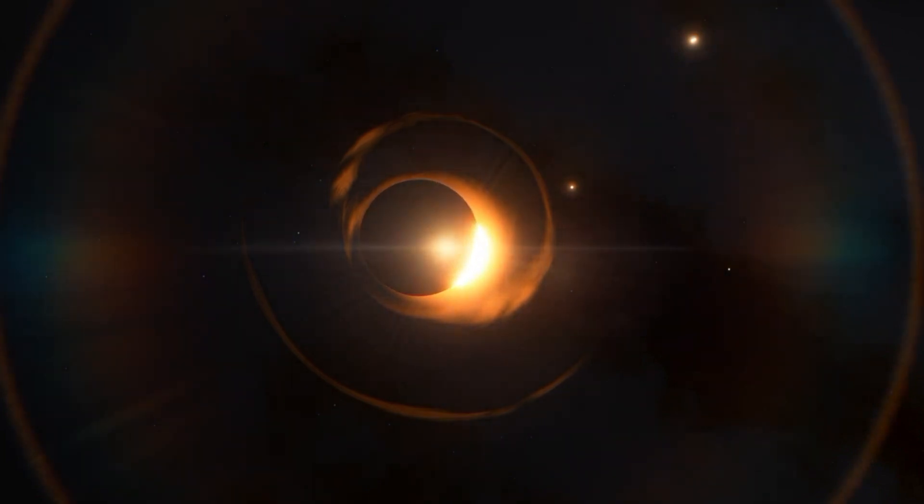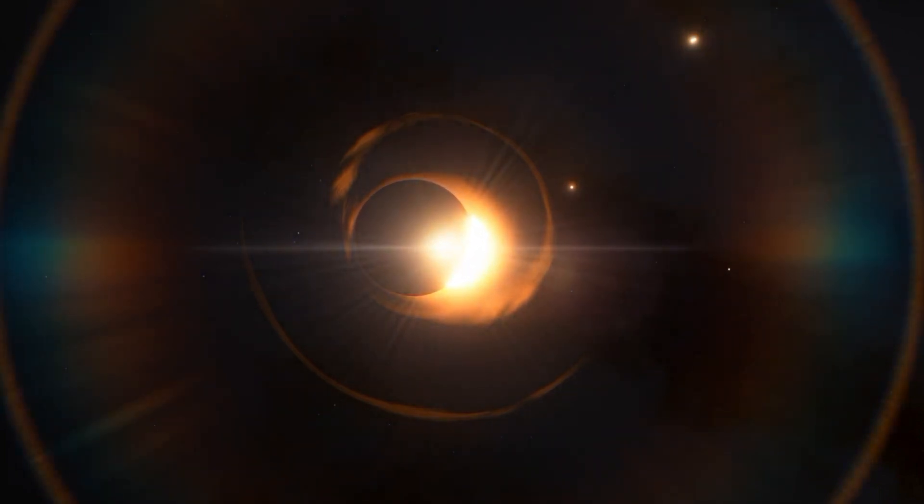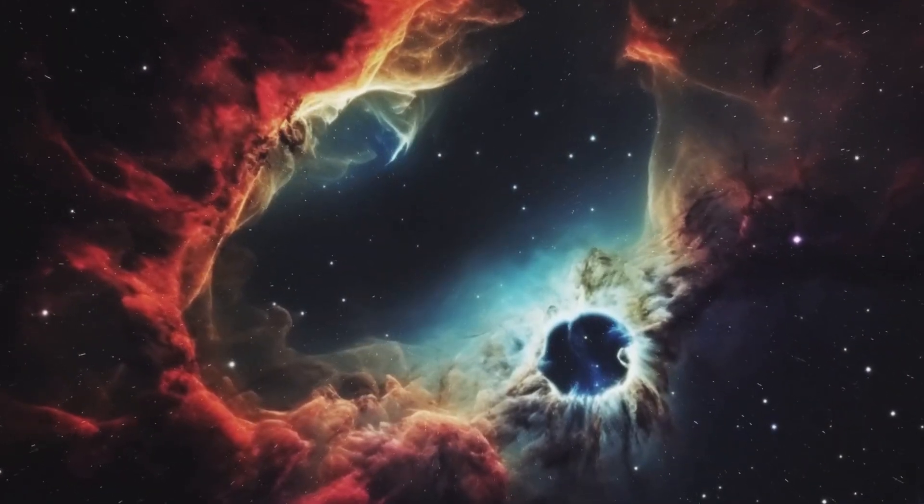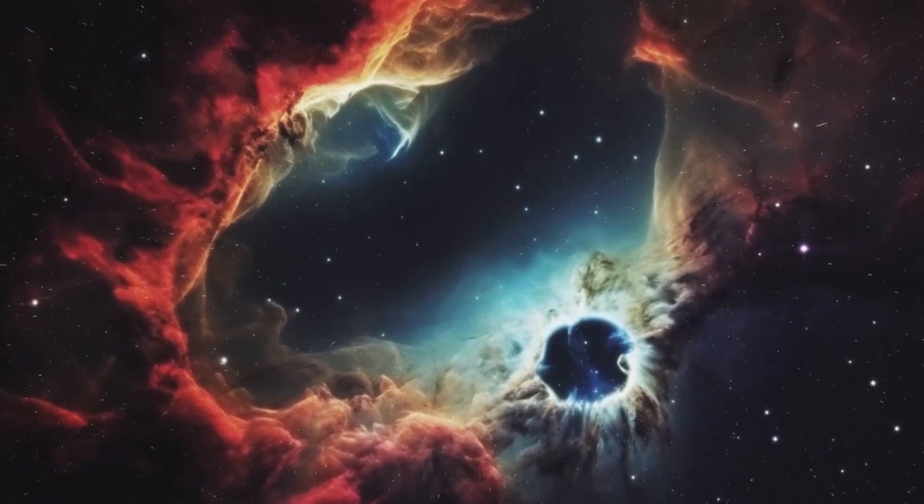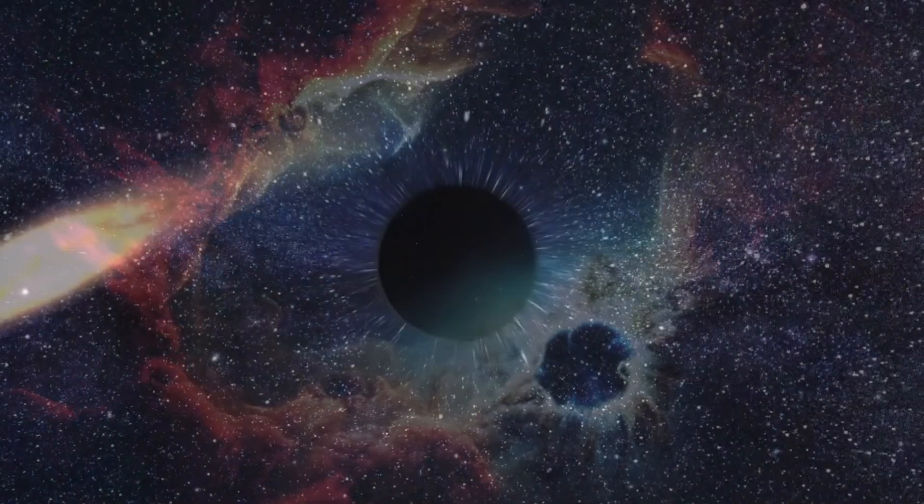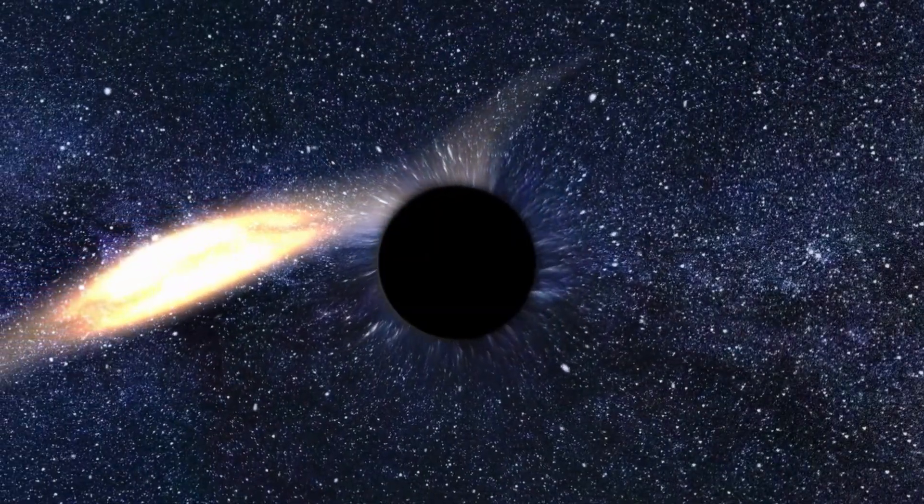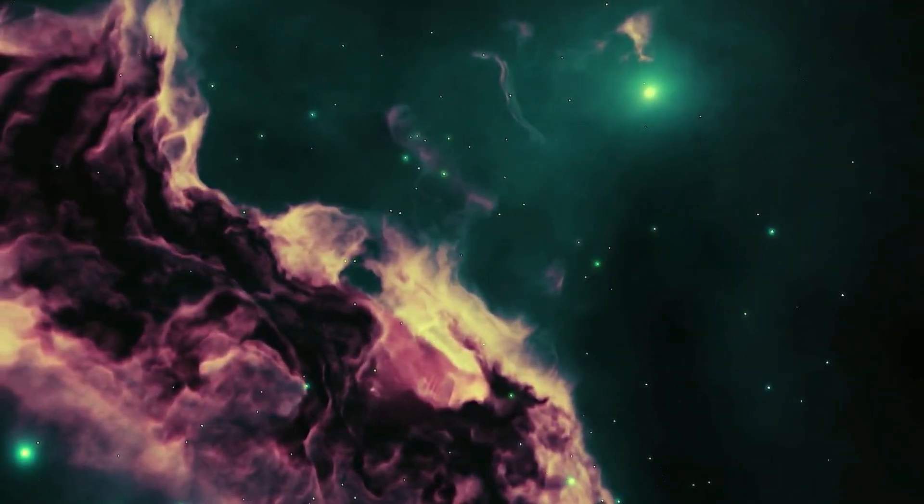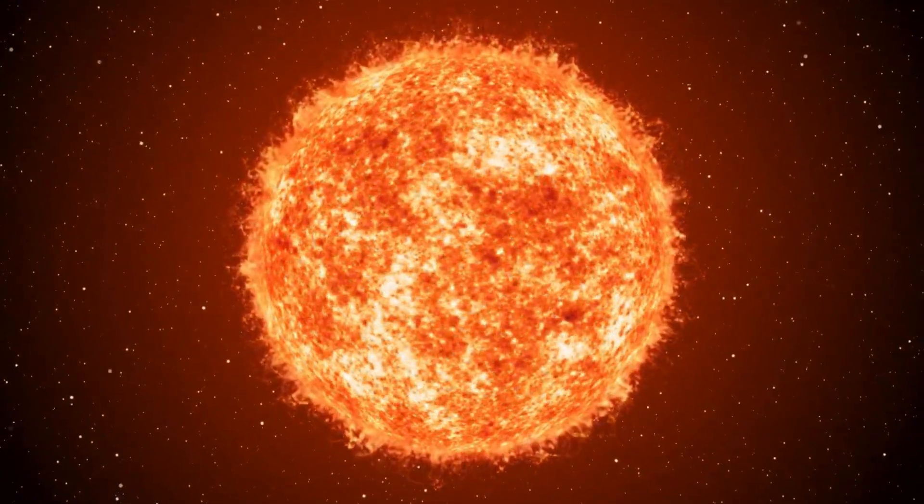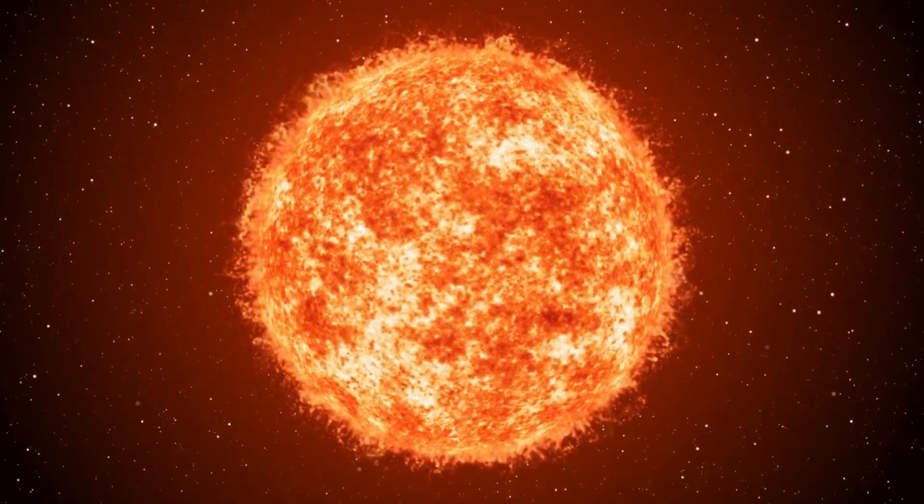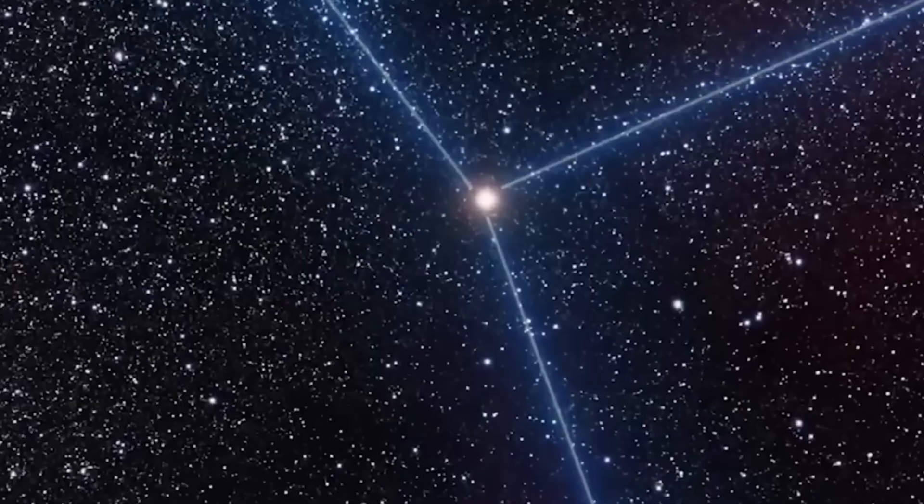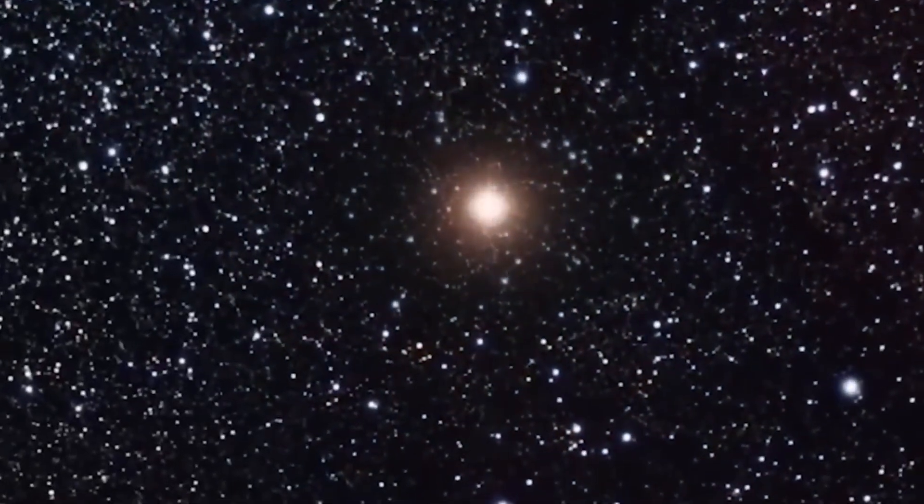Despite the star eventually regaining its normal brightness, further investigations using powerful telescopes revealed that Betelgeuse had indeed experienced a significant dimming event. As the star continues its journey towards the end of its lifespan, it is now teetering on the brink of a potential explosion. Join us in today's video as we talk about NASA's new terrifying warning about the Betelgeuse supernova explosion happening now.